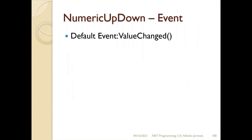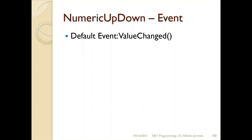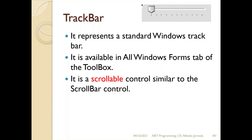The default event of the NumericUpDown control is 'ValueChanged' — whenever the value in the control changes, this event is fired. So, to summarize: if you want to display numbers or allow the user to select a value within a particular range — for example, marks should only be between 0 and 100 — you can place a NumericUpDown control, set Minimum to 0 and Maximum to 100, and validate any value the user enters.